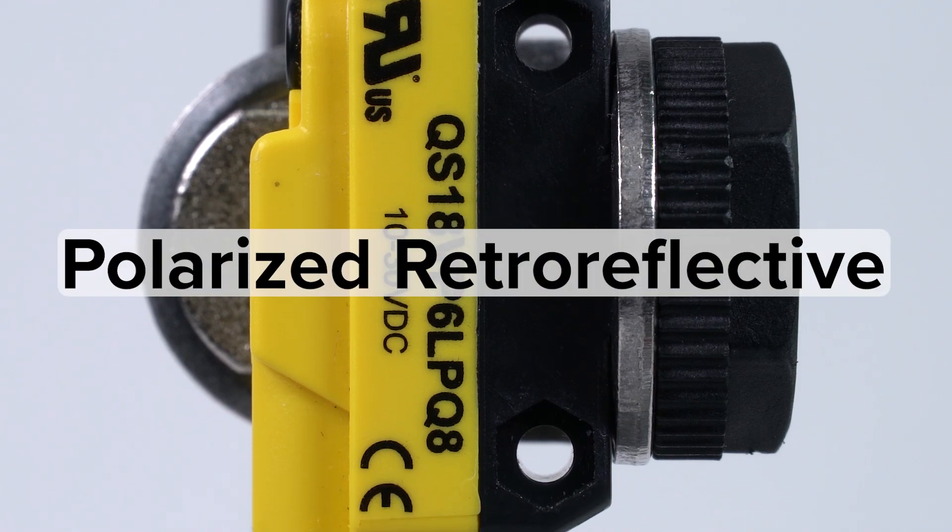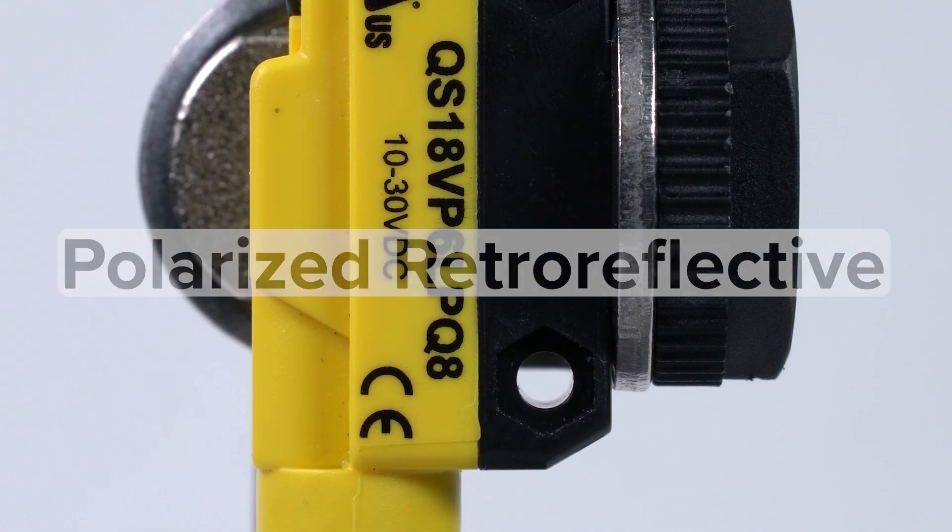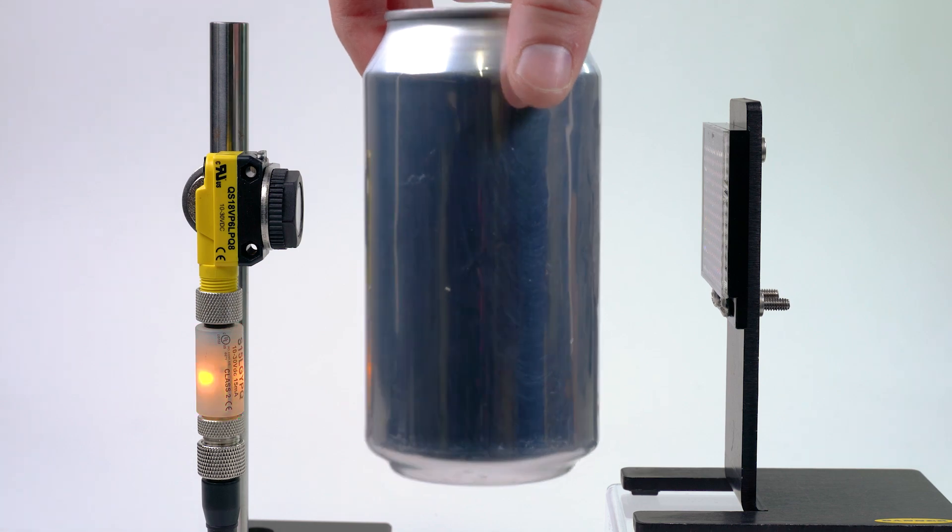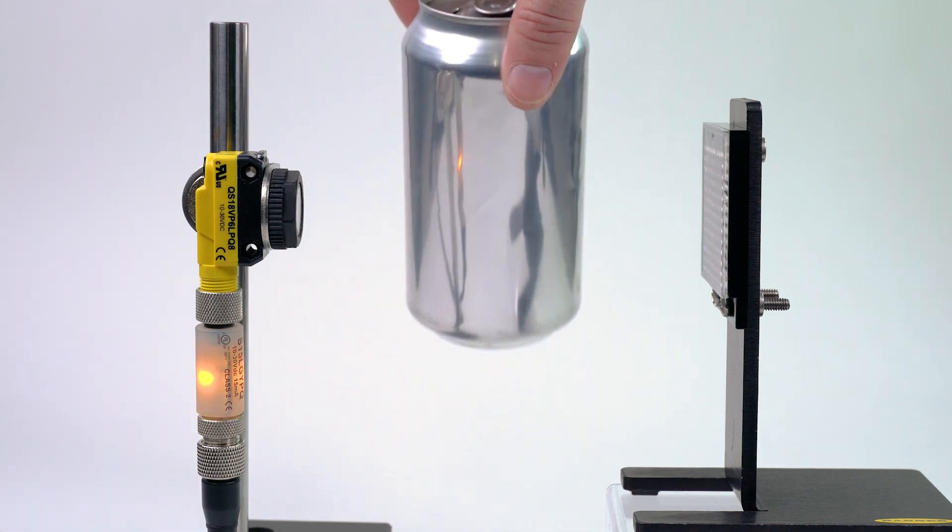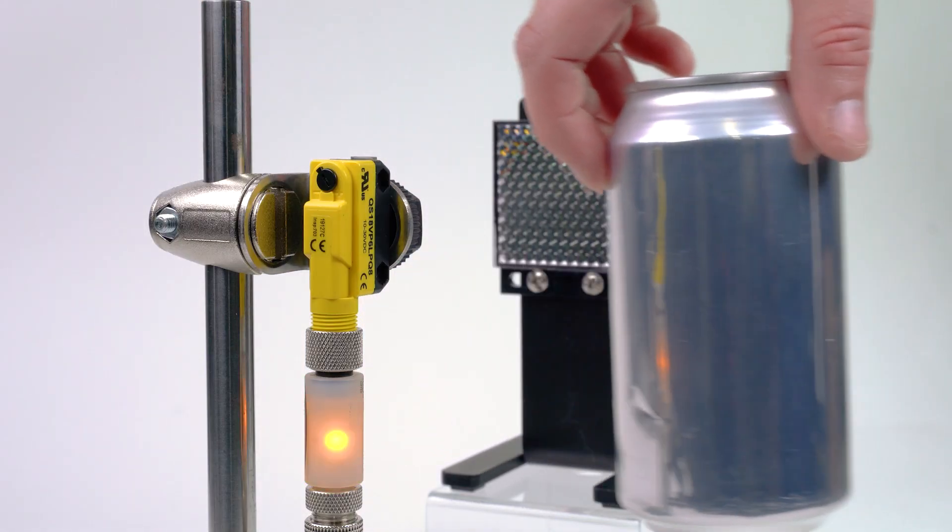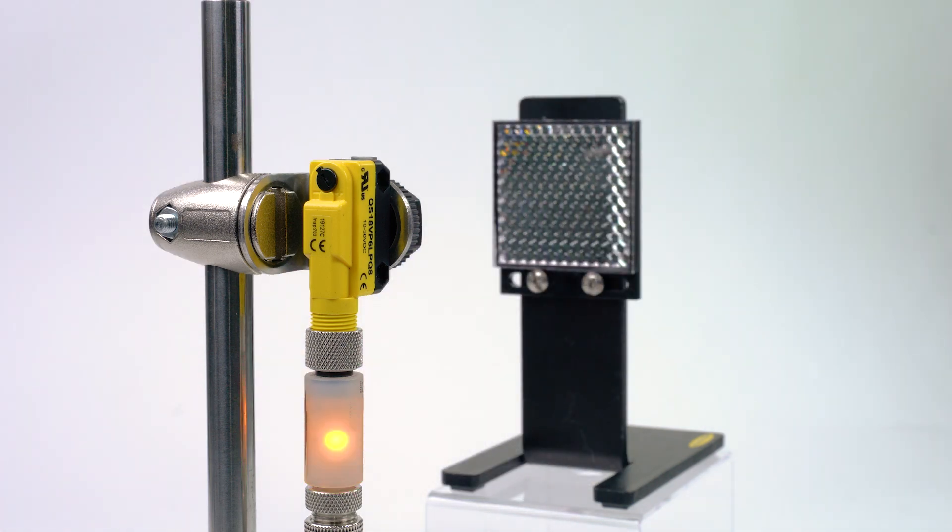Switching to a polarized sensor will help detect even the most reflective of targets due to the polarized filter in the sensor lens. The polarized option is recommended for most retro reflective sensor applications.